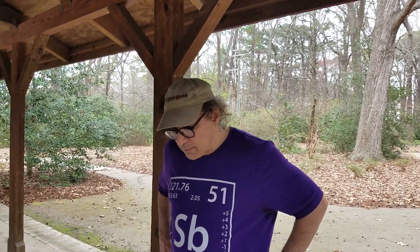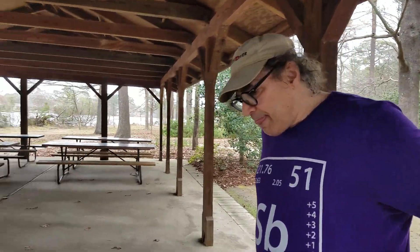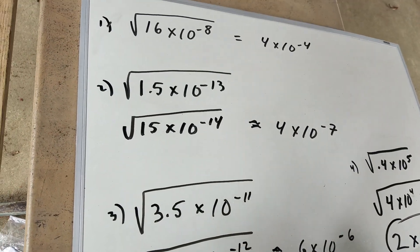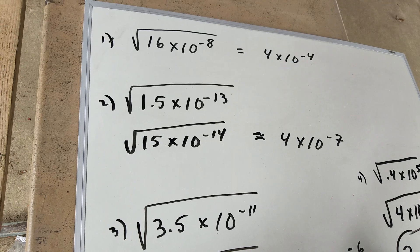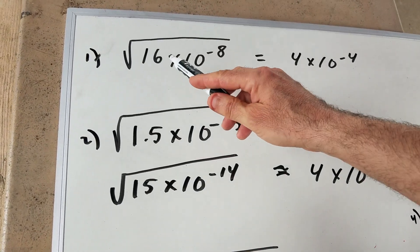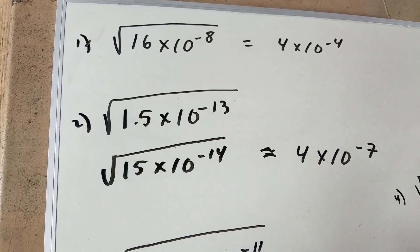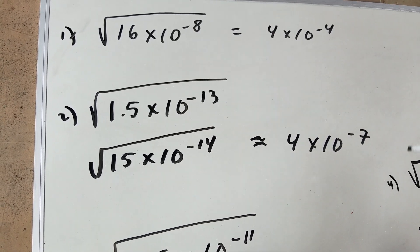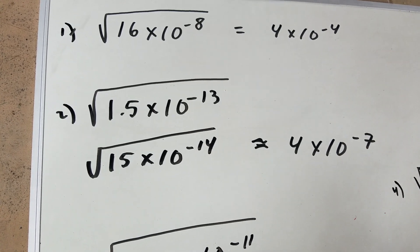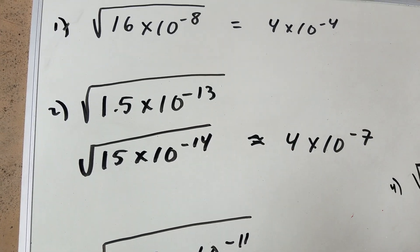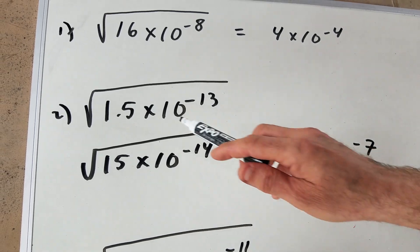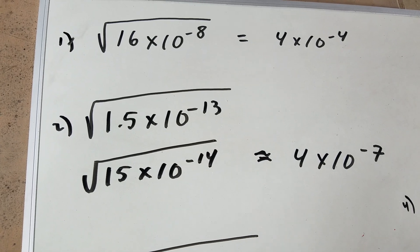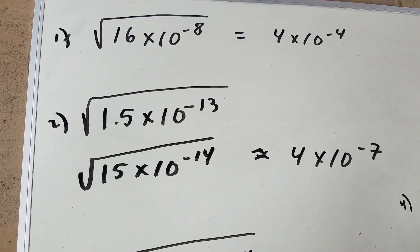Dr. Romano, you're always doing work. I hear an airplane in the background — I hope they can hear you over this. If I was to take the square root of 16 times 10 to the minus 8, this is straightforward and most kids would simply say you're going to take the square root of 16, which is 4. The square root of 10 to the minus 8 — you just take half of that exponent — and we get minus 4. So we get 4 times 10 to the minus 4, and everyone's happy. Here's where the problems are coming in with kids. If I said the square root of 1.5 times 10 to the minus 13th, as you can see, this is an odd number, so we have a little problem.